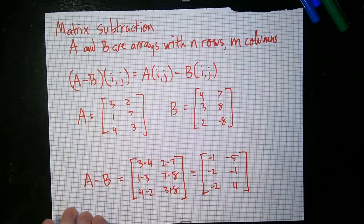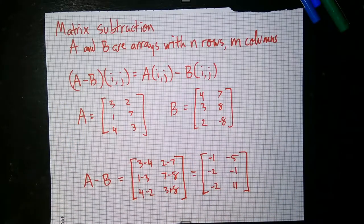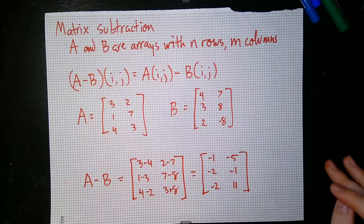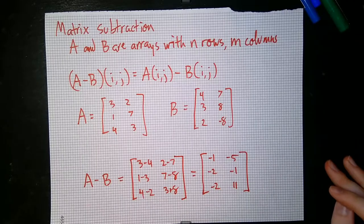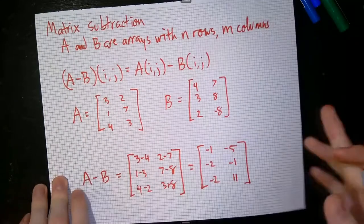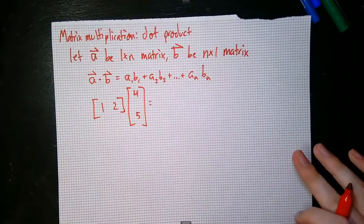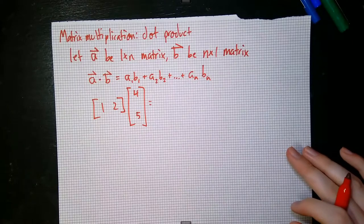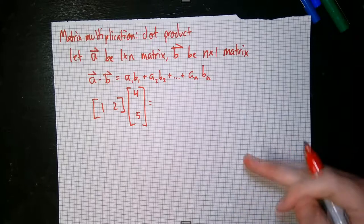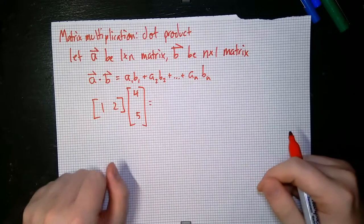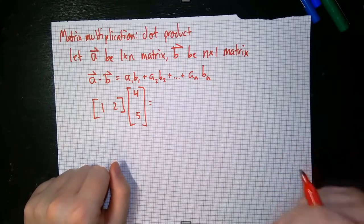Both matrix addition and subtraction are pretty straightforward. Unfortunately, that's kind of where it ends in terms of basic matrix operations. Next we're going to talk about multiplication and division. Matrix multiplication is pretty complicated, so we have to recurse through some quick operations. The first is the vector operation called the dot product.